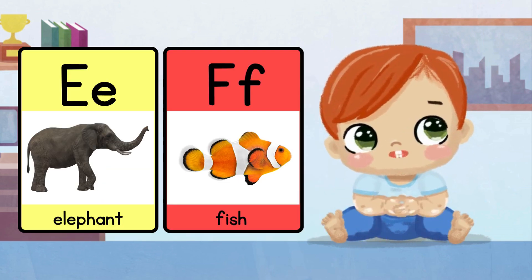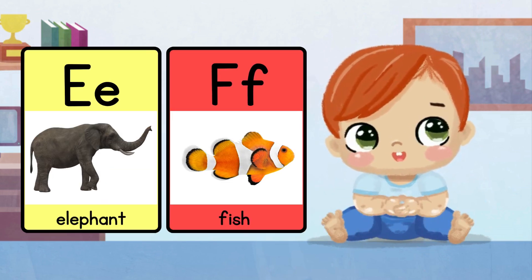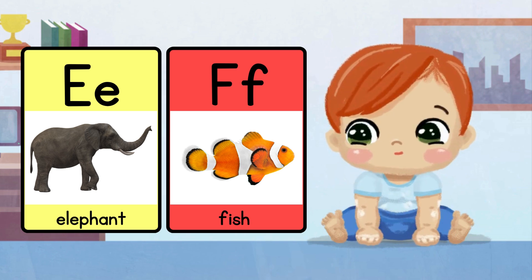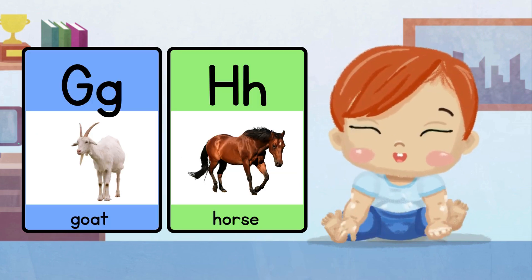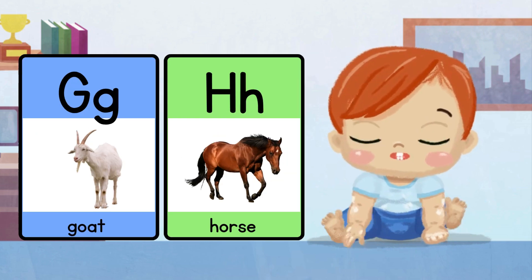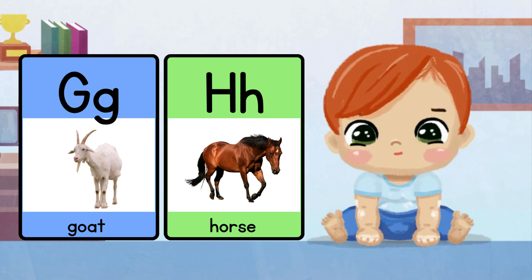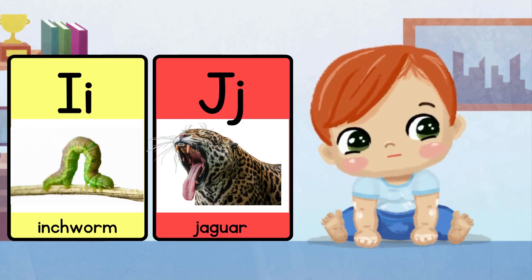E for elephant. F for fish. G for goat. H for horse. I for inchworm.